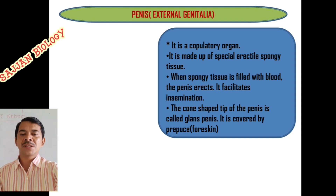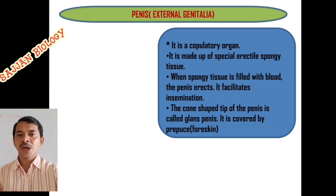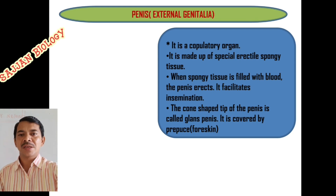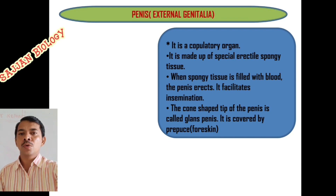Along with these tissues there are blood vessels to supply blood. When the spongy tissue is filled with blood, the penis erects, which facilitates insemination during copulation. The penis releases sperms or semen into the female genital tract. The cone-shaped tip of the penis is called the glans penis and it is covered by a loose folded skin called the foreskin.